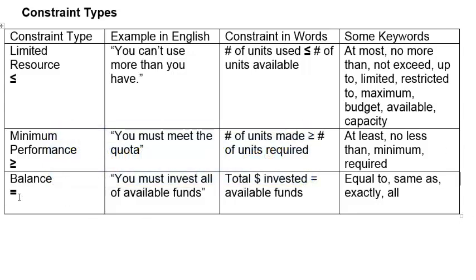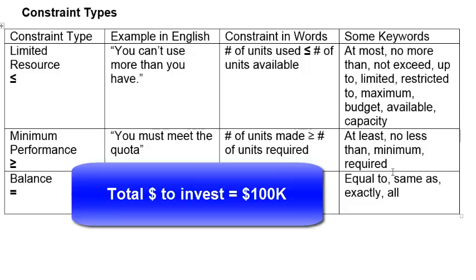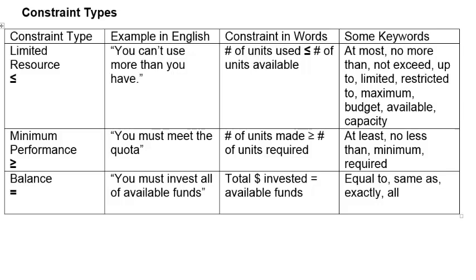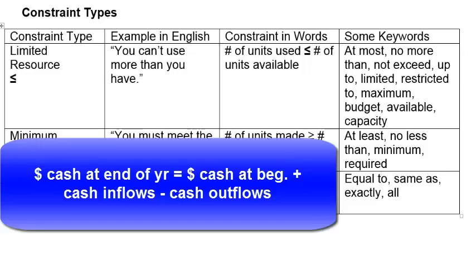Some keywords for the equality constraint. We might be told that total amount to invest is equal to $100,000. Or we might be told all $100,000 must be invested. Or you could have a constraint indicating that the amount of cash left at the end of the year must be equal to cash at the beginning of the year plus cash inflows minus cash outflows.